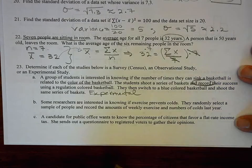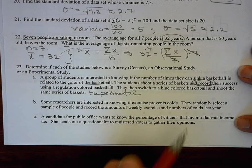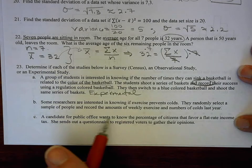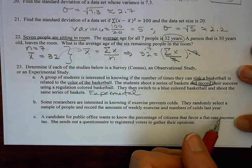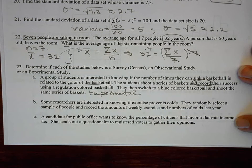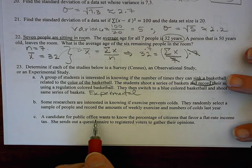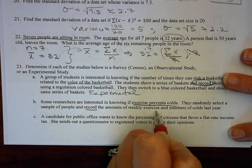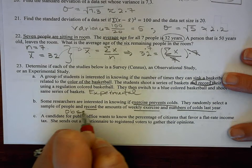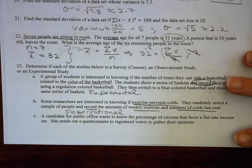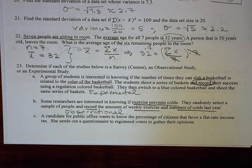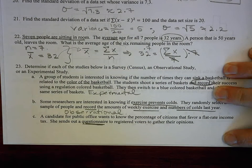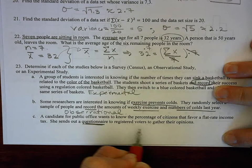The next example asks whether exercise prevents colds: they randomly select people and record weekly exercise amounts and number of colds last year. Since they're just recording what already happened — observing — this is observational. And a candidate who sends out a questionnaire to know citizens' opinions on a flat rate income tax is asking questions and gathering opinions, so that would be a survey or census.